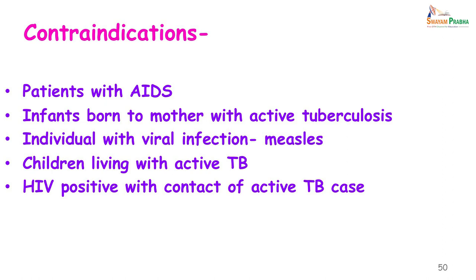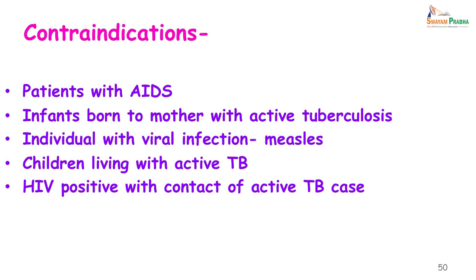BCG is contraindicated in patients with AIDS because it is a live attenuated vaccine. It is also contraindicated in infants born to mothers with active tuberculosis, individuals with viral infections like measles, children living with active TB, and HIV-positive individuals who are in contact with an active case of TB. For these individuals, TB can be prevented by chemoprophylaxis, where a daily dose of isoniazid 5 mg per kg body weight is given to persons with latent TB who are at a high risk of developing the disease, infants of mothers with tuberculosis, and children and HIV-positive patients who have household contacts suffering from tuberculosis.